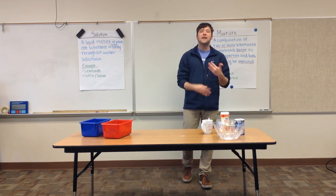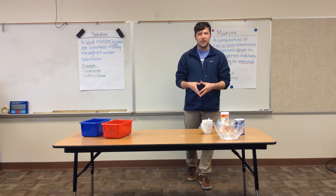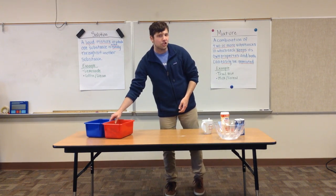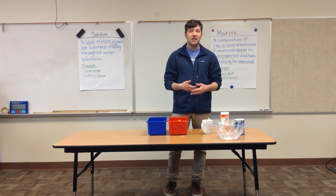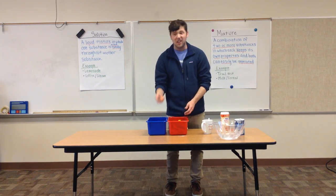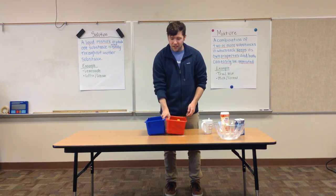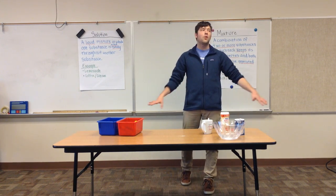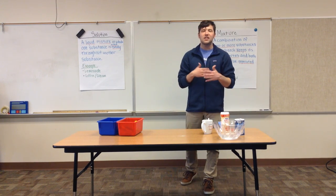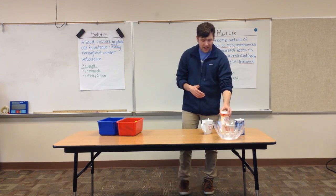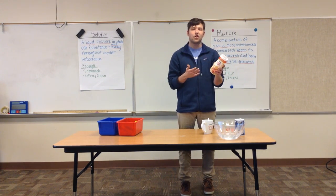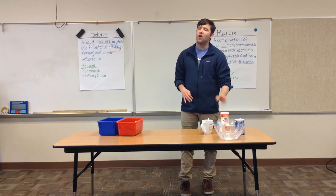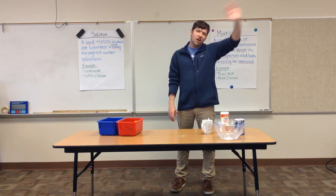So in summary, we mix things together when we combine two or more things. When those two things can be easily separated and maintain their own properties, it's called a mixture. Examples of mixtures include things like Chex Mix or Trail Mix, blocks and highlighters, or even seawater, which we represented with our salt water. When something is evenly distributed and dissolves into a liquid — like our creamer in coffee — and you can't get that substance back, that's called a solution. I hope this helps, and I can't wait to see y'all in the next video. Bye, everyone!